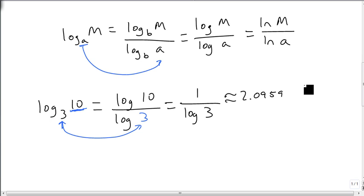That's roughly my answer. Just to make sure this fits, 3 squared is 9, and 3 cubed is 27, and the 10 falls between them, closer to the 9 than the 27, so it's going to be a low decimal after 2. And that's the change of base formula.